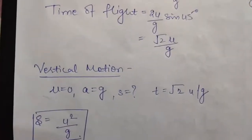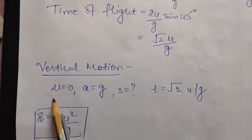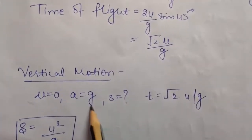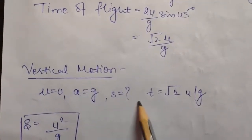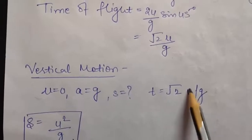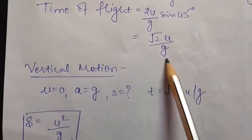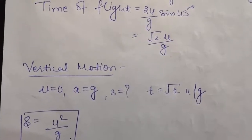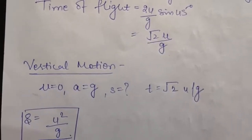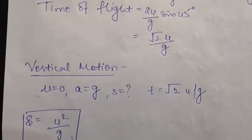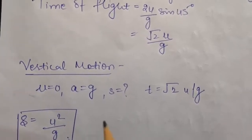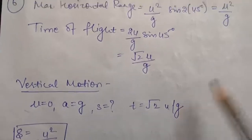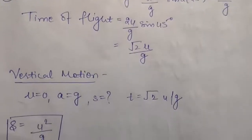Now let us consider vertical motion. In vertical motion, initial u will be 0. Acceleration will be equal to g. You have to calculate the distance, and t will be equal to root 2u/g as calculated before. Just use the equation s = ut + ½at². Using that equation of motion, you can easily calculate the distance, which comes to be u²/g. This is the same as the maximum horizontal range, so the statement is proved.